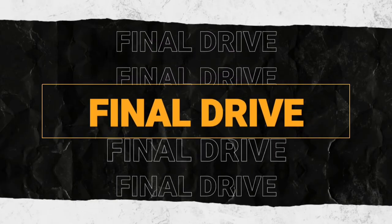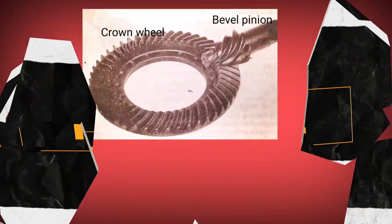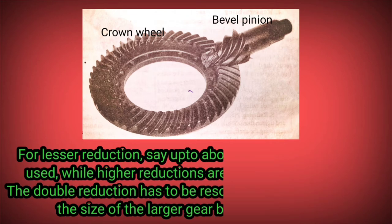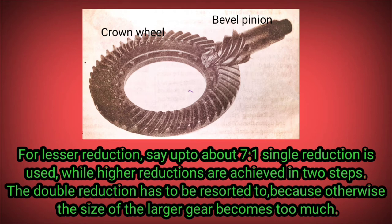The final drive functions to provide a permanent speed reduction and also to turn the drive through 90 degrees. The reduction provided is about 4 to 1 in cars and 10 to 1 in heavier vehicles. This is done either in one or two stages.